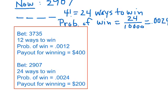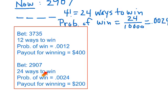Here's a summary of the two examples. In the earlier video we were betting a four-digit sequence where one digit was used twice, and in that case we came out with twelve ways to win, giving a probability of winning of 0.0012. In the present example, betting four different digits, we have twenty-four ways to win, which doubles our probability of winning.